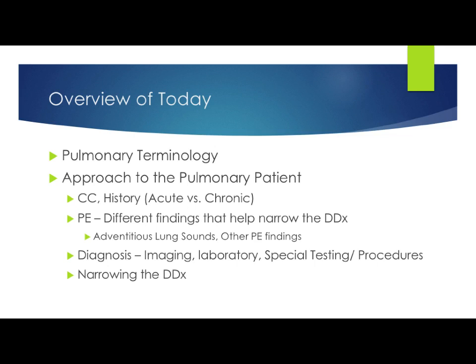Then we're going to talk about the approach to the pulmonary patient. When we see a patient coming into the clinic — whether it be the ER, a family practice clinic, or any clinic — we're going to learn how to approach that patient who comes in with pulmonary chief complaints. We'll take the common pulmonary chief complaints and figure out what is important to acquire from the history — the HPI, past medical history — and then go into basic physical exam findings that help us narrow down our differential diagnosis.